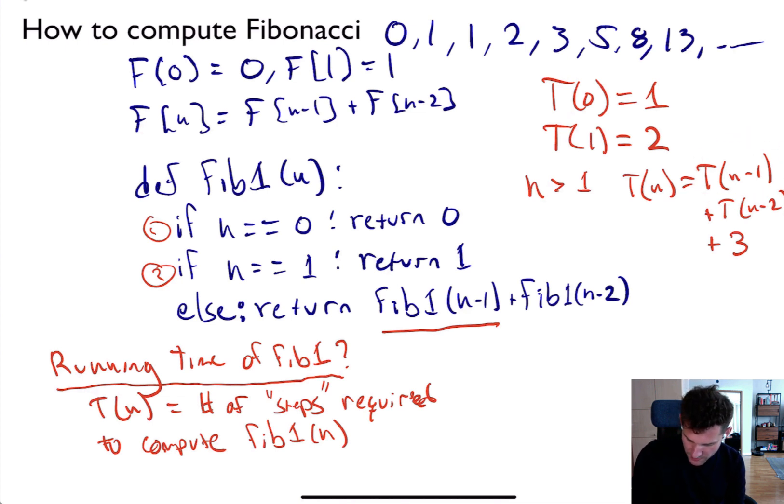This T(n-2) is coming from this call. And the three here comes from the fact that we have one operation we check first, another operation, and then we have to add these two terms together. That's a third operation. So this is my formula, roughly speaking. This is a decent formula for an estimate of the running time of Fib1.